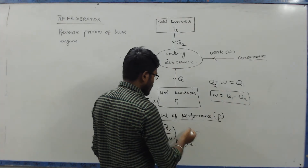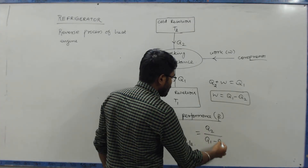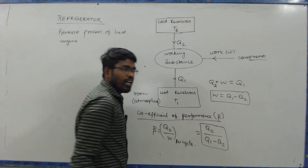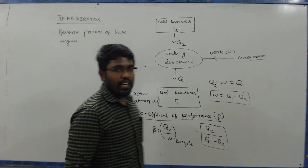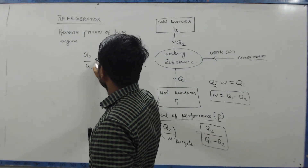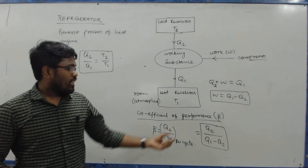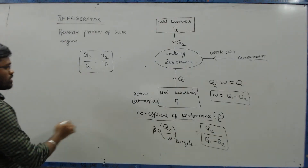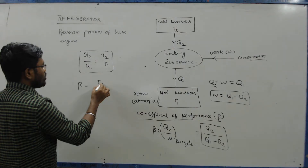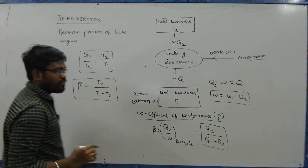The Coefficient of Performance Beta is equal to Q2 divided by Q1 minus Q2. Using the heat engine derivation relation Q2 by Q1 equals T2 by T1, we get Beta equal to T2 divided by T1 minus T2. This is the Coefficient of Performance.